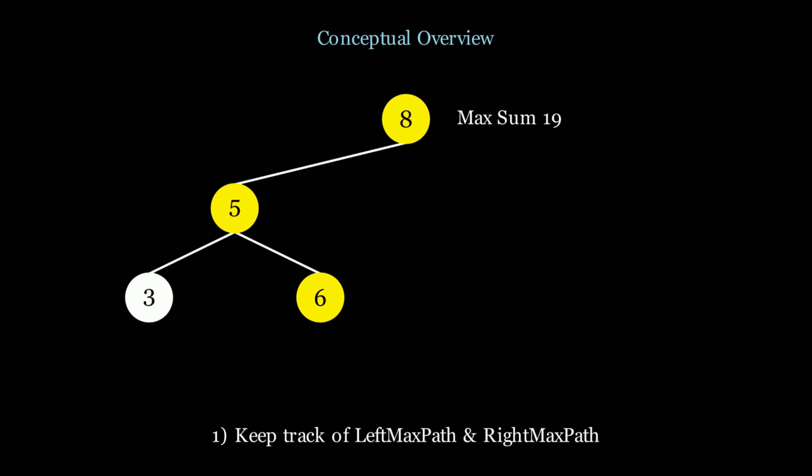We're going to keep track of left max path values and right max path values at every single node. From node 5's perspective, the left max path is 3 from node 3, the right max path is 6, so the maximum path at node 5 is 11. We take the left or right max path and add the current node's value. The right max path is greater, so we take 6 plus 5, giving us 11. We can't take both branches — we're not treating 5 as the root right now, just looking at a path you can continuously extend. So we must choose one branch. We need to keep track of the left and right max path for every single node.